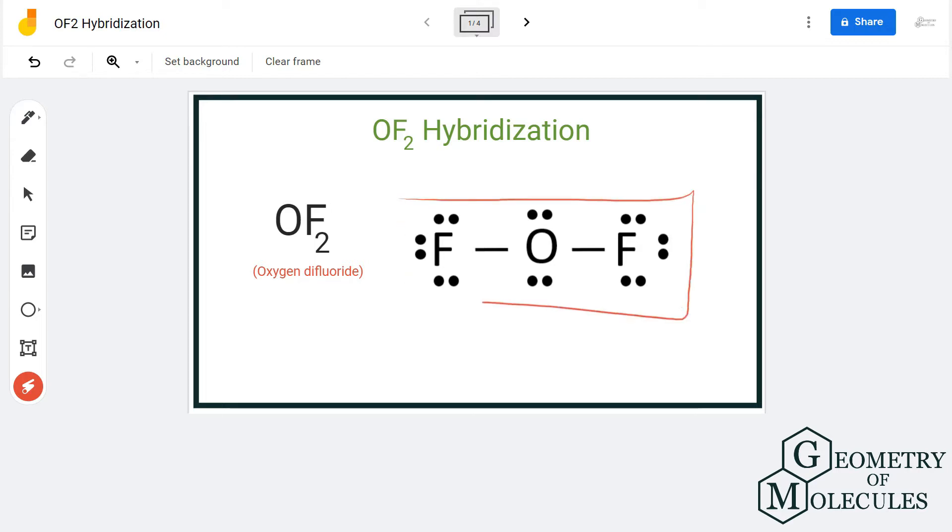Here is the Lewis structure of OF2, in which oxygen is forming single bonds with both fluorine atoms, and there are two lone pairs of electrons on the oxygen atom.